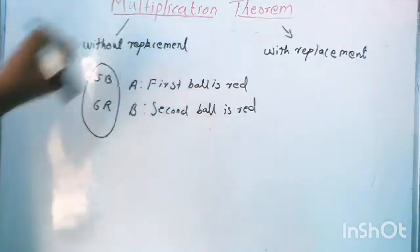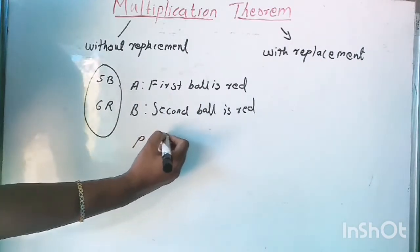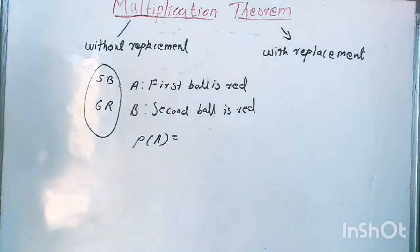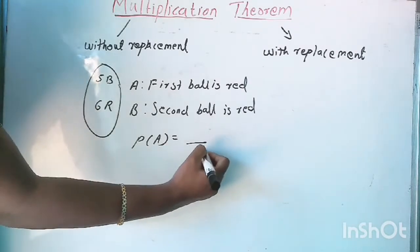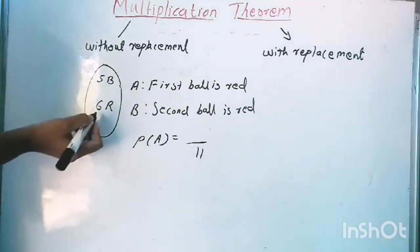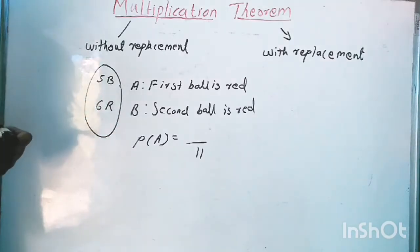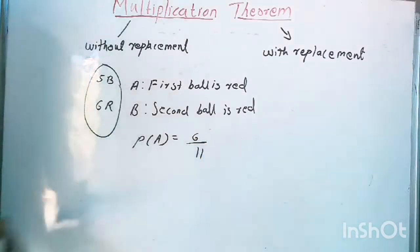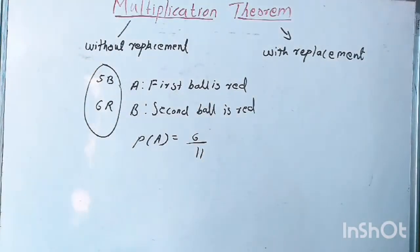What is the probability of A? P of A is equal to — total we have six plus five, eleven balls, and we need to get one red ball. We know that the number of red balls is equal to six, so the outcomes favourable to A is equal to six. Therefore P of A is equal to six by eleven.